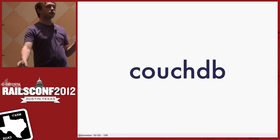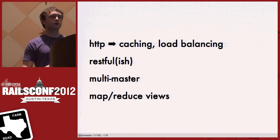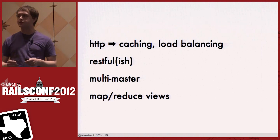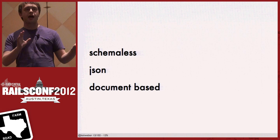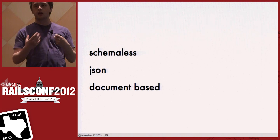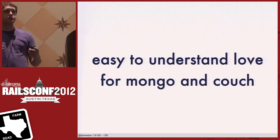After a while I found CouchDB, and I really liked it. CouchDB is a database that runs behind HTTP. You can put caching in front of it, load balancers in front. It has a RESTful-ish API. You can do multi-master replication and query it with MapReduce views. But the real killer feature, at least for me, was that it's a schema-less database. You represent all your documents as JSON and think about them as documents instead of records. It's easy to understand why people love MongoDB for the same reasons — documents are just fun.